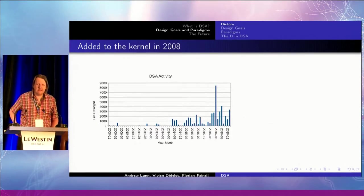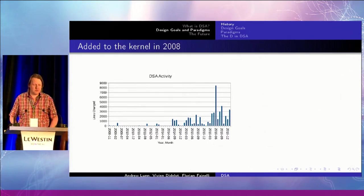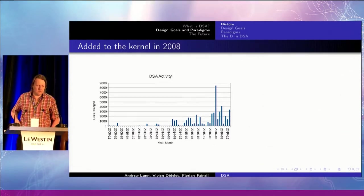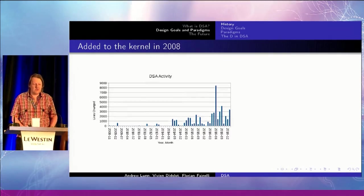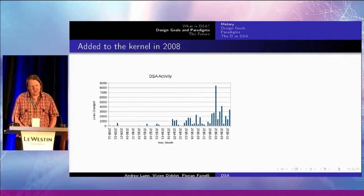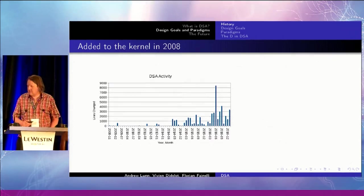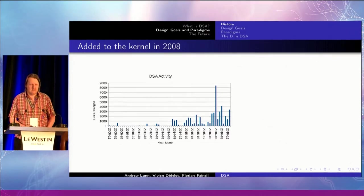DSA's been around for a while — it's old, older than most of the rest of the network switch stuff. It was first added in 2008 and then went dormant. Nobody was really interested in it. Between 2008 and 2014, those little peaks are API changes where somebody did the mechanical work just to keep it compiling, but it wasn't really used that much in the kernel. And then we got involved, and it just goes — whee! There's a lot more interest in it.